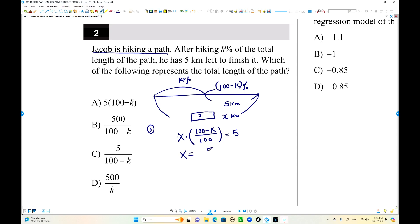So what is the value of x? Five over 100 minus k over 100. That is reciprocal. Five times reciprocal is 100 over 100 minus k. Five times 100 is 500 over 100 minus k. Choice B is the answer.